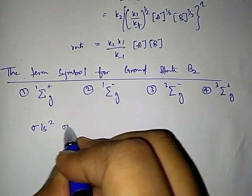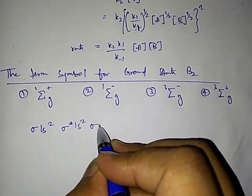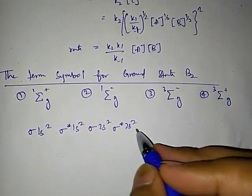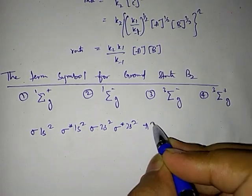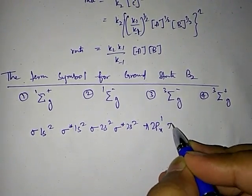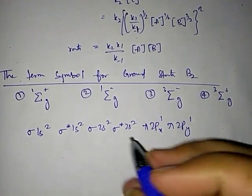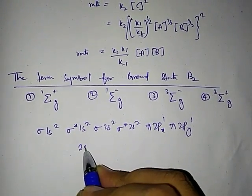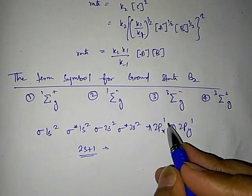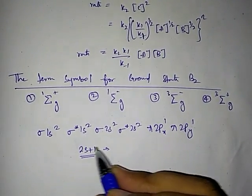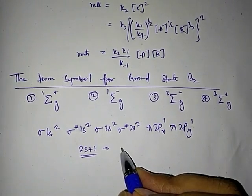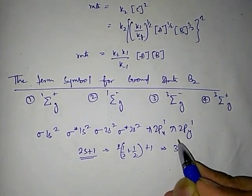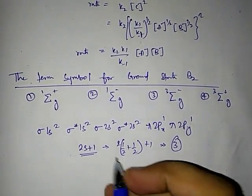For B₂, the electronic configuration is: σ1s², σ*1s², σ2s², σ*2s² — that's 8 electrons — then π2pₓ¹ and π2p_y¹, giving 10 electrons total. For spin multiplicity (2S+1): each electron contributes ½, so S = ½ + ½ = 1, giving 2(1)+1 = 3. The spin multiplicity is 3.